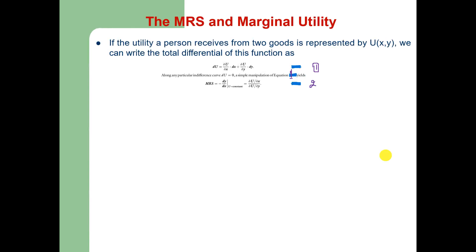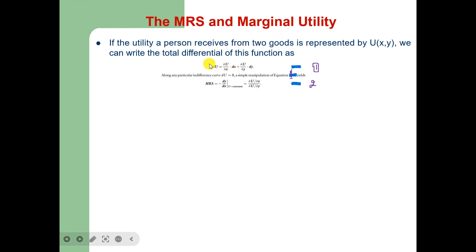If the utility that a consumer receives from two goods is represented by the utility function u(x, y), we can write the total differential of this function as du = (∂u/∂x)dx + (∂u/∂y)dy. Now, along any particular indifference curve, the change in utility is 0, so the total differential du will be equal to 0.